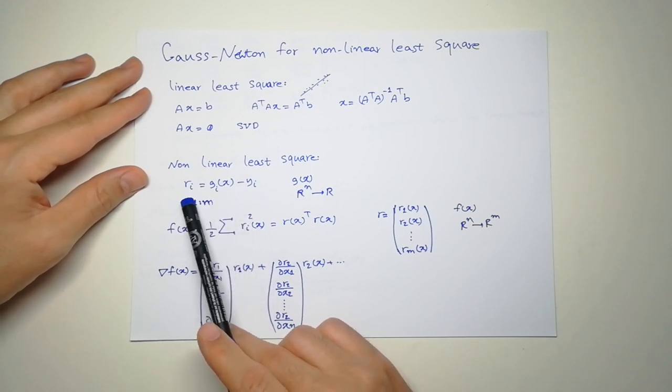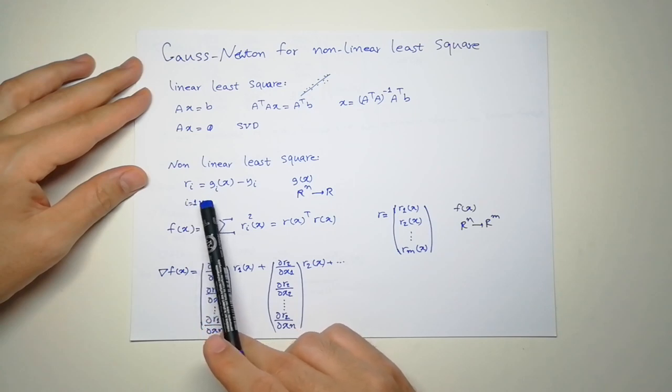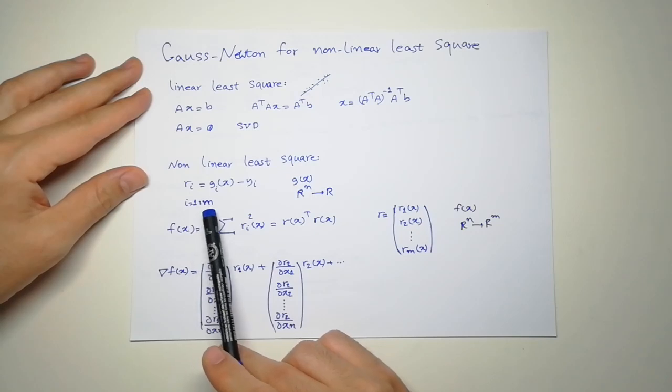So we call a new function R. R stands for residual and we want to make them as small as possible for every data that we have.